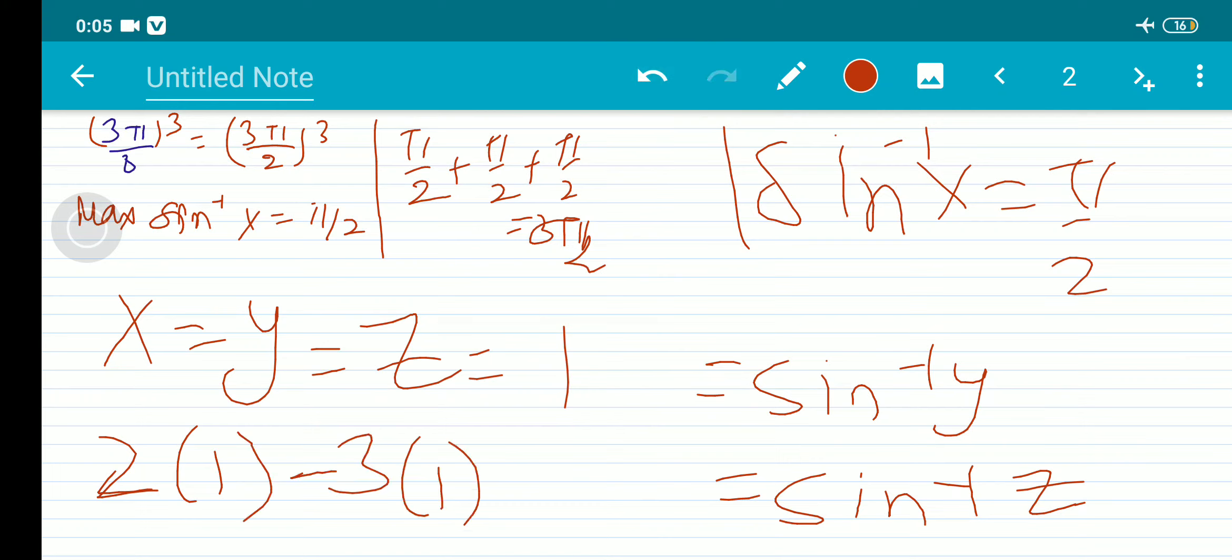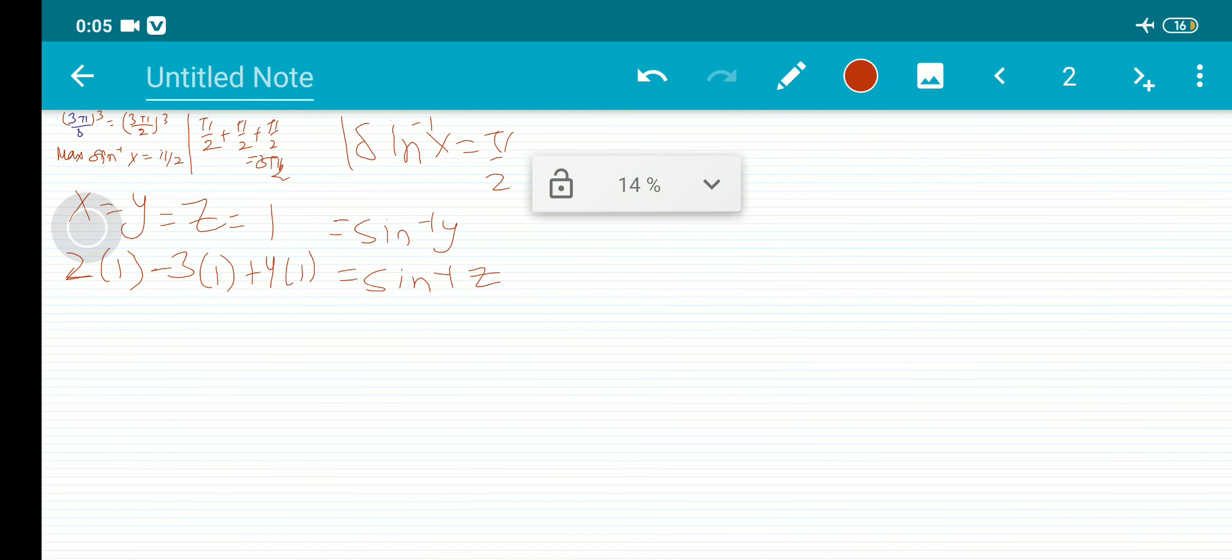Okay, so 2x means 2 times 1 minus 3 times 1 plus 4 times 1, which is equals to 3. So that is the answer.